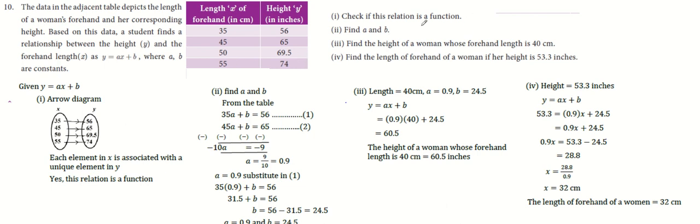If you want to check the relation, here is the domain: 35 is 56, 45 is 65, 55 is 69.5, 55 is 74.